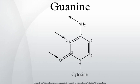Basic principles: guanine, along with adenine and cytosine, is present in both DNA and RNA, whereas thymine is usually seen only in DNA, and uracil only in RNA. Guanine has two tautomeric forms, the major keto form and rare enol form. It binds to cytosine through three hydrogen bonds.